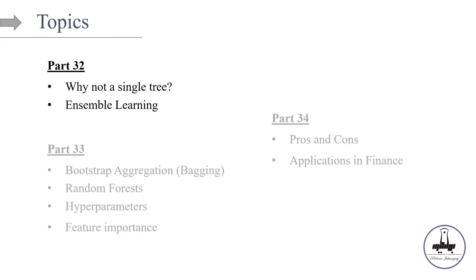We're going to talk about ensemble methods in three parts. In this episode, Part 32, I'll cover the motivation for why we should use ensemble methods and the mathematics behind it. In Part 33, we'll cover bootstrap aggregation, or bagging, and compare it with random forests, discussing hyperparameters and feature importance. And finally, in Part 34, we will talk about pros and cons and applications in finance.